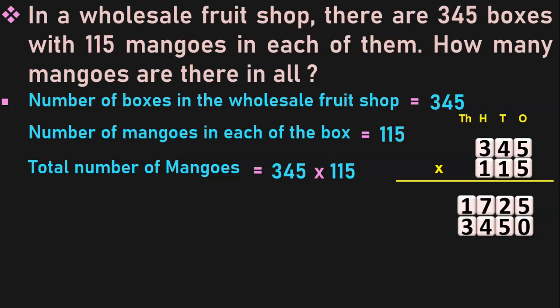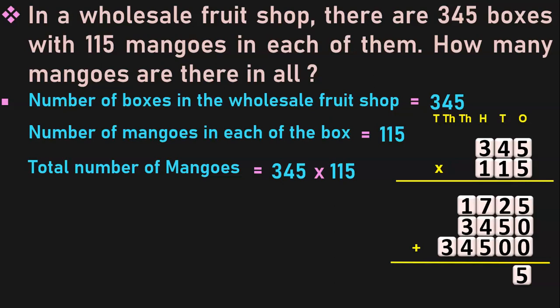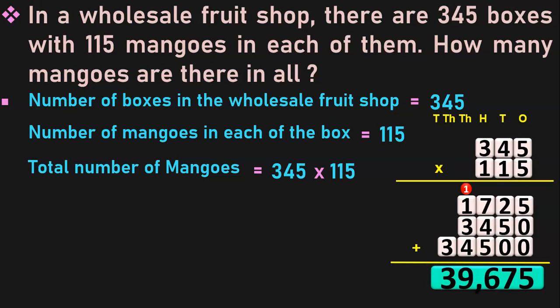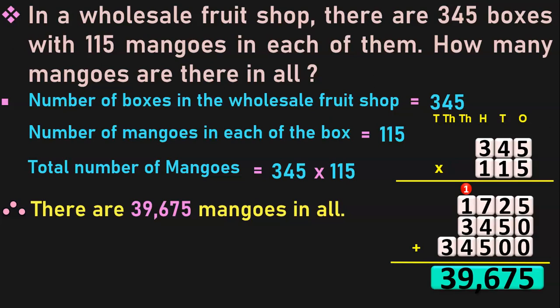Next, multiply 345 by 100 because the next 1 is in the 100's place. Add a 0 in the 1's place and a 0 in the 10's place. 1 into 5 is 5; 1 into 4 is 4; 1 into 3 is 3, and this will move to the next place value — thousands. Now add all three products: 5 plus 0 plus 0 is 5; 2 plus 5 is 7; 7 plus 0 is 7; 7 plus 4 is 11; 11 plus 5 is 16, 6 carry over 1; 1 plus 1 is 2; 2 plus 3 is 5; 5 plus 4 is 9; and in the next place, 3. The answer is 39,675. Therefore there are 39,675 mangoes in all.